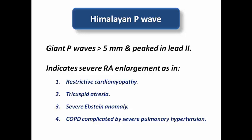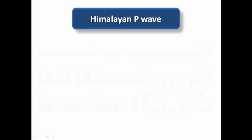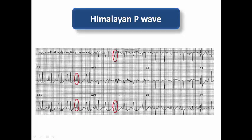In this ECG example, very giant P waves compete with the QRS complex amplitude — these are caused by severe right atrial enlargement. In AVR, the depth of the negative P wave also exceeds 5 mm. These findings signify Himalayan P waves. Echocardiography should be ordered to assess the right side of the heart and determine whether the cause is congenital — such as Ebstein anomaly or tricuspid atresia — or acquired, like pulmonary hypertension or restrictive cardiomyopathy.